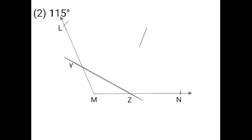Now keep your rounder on point Z and draw the other arc. You have to cut this arc. Finally, you have to draw the ray from point M at the position where I cut two arcs on point Y and point Z. The arcs which I cut from point Y and point Z, you have to give the name — point X. You can give any name to any point. Finally, 115 degree, you have to mark here on the angle.